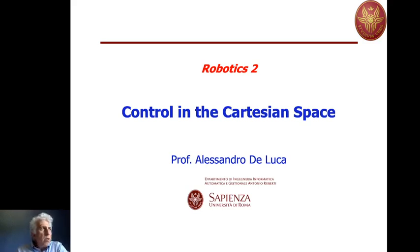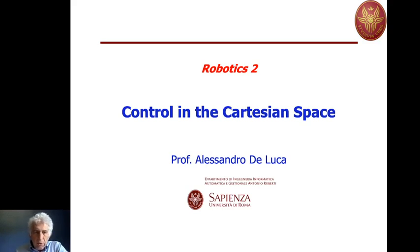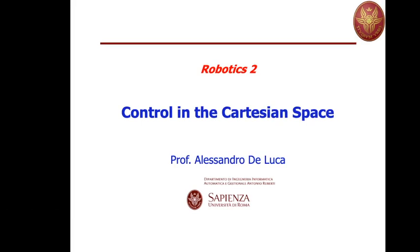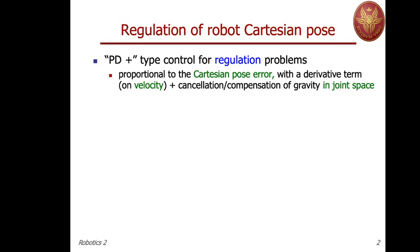Now with this extension today we will get closer to the point of interest of robot operation, namely the end-effector level. We will see some selected results about regulation and trajectory tracking, and we leave the generalization to other possible control laws to your own study. We will start with the first type of controller, which is intended for regulation of the desired Cartesian pose at the end-effector level.